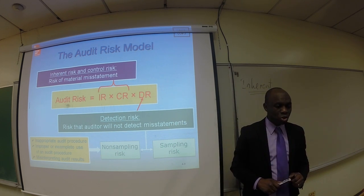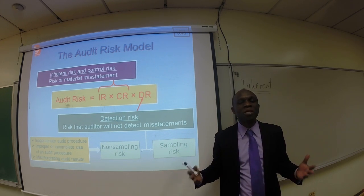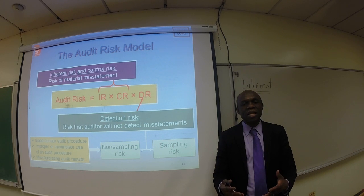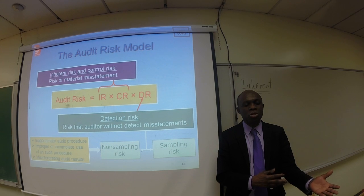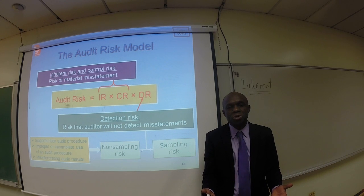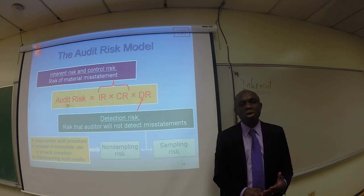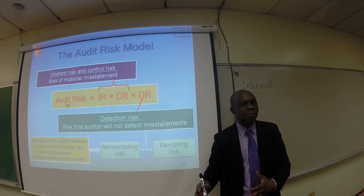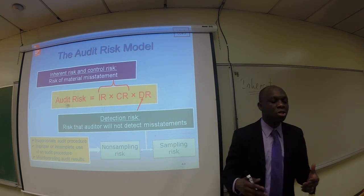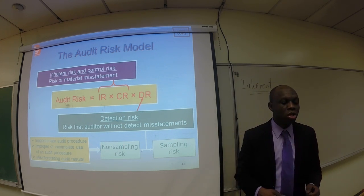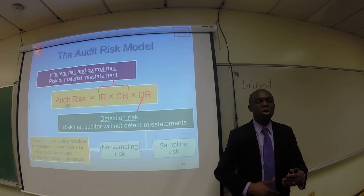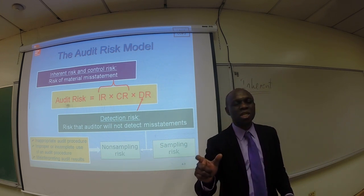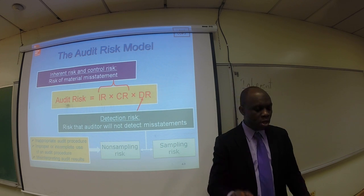In connection with detection risk, in audit we do a lot of sampling — testing less than 100% of the population — so there is a risk element to that. The sample we select and test might not be a true representative of the entire population. We established earlier that it is not possible to test every transaction because it is not only too costly but also takes too much time. We also have non-sampling risk — risks not related to sampling. For example, the auditor did not properly interpret an audit result, or the auditor used the wrong audit procedure during the course of doing his work. The bottom line is the auditor has control over detection risk and can do one or two things to minimize that risk.